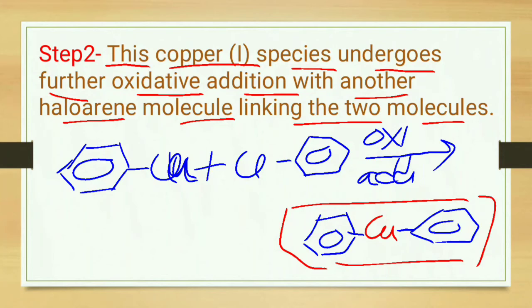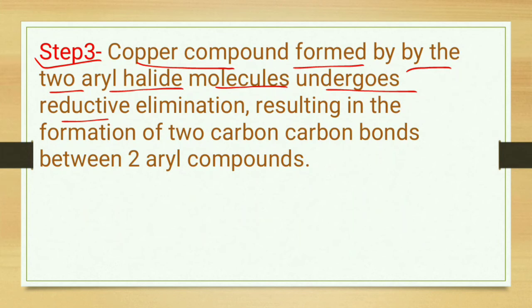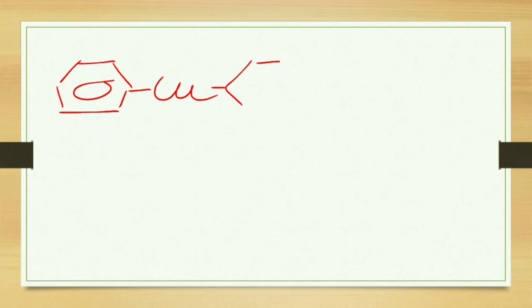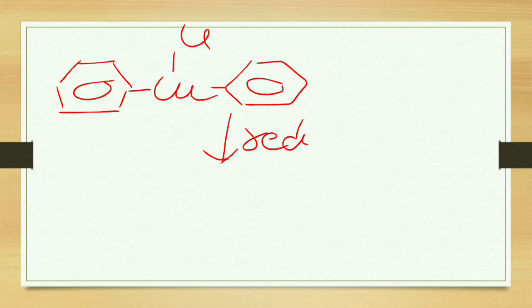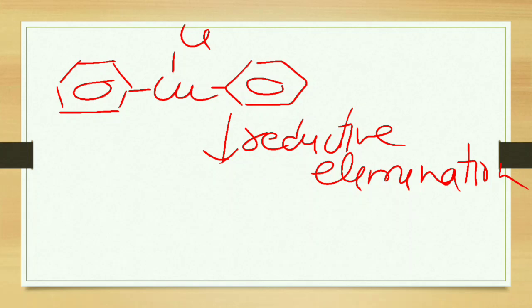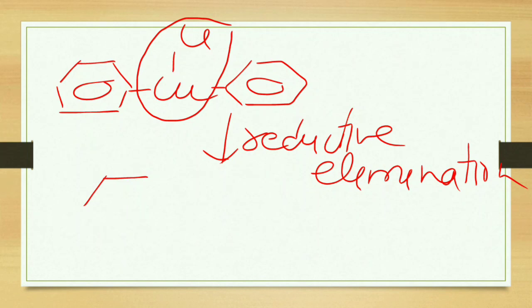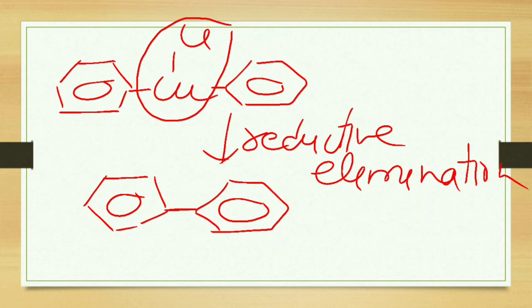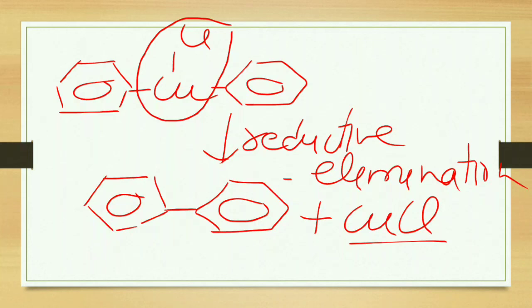Now this copper is removed in the third step. The copper compound formed by the two aryl halide molecules undergoes reductive elimination, resulting in the formation of a carbon-carbon bond between two aryl compounds. Reductive elimination occurs, the cuprous chloride is removed from this molecule, and the two benzene rings are linked with each other by a carbon-carbon bond. The cuprous chloride is removed, giving us our product — a symmetric biaryl — which is the product of the Ullmann coupling reaction.